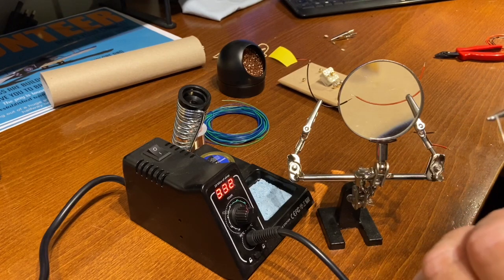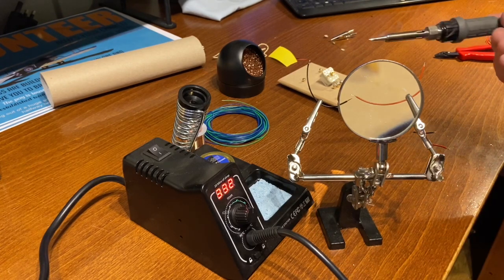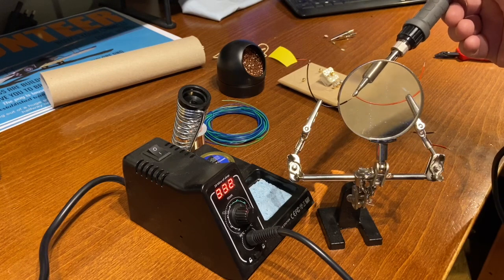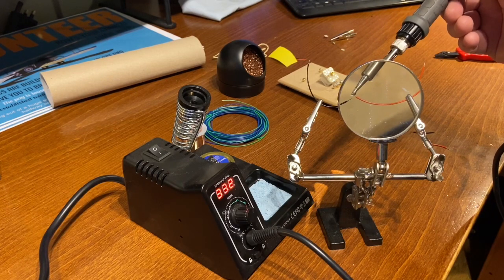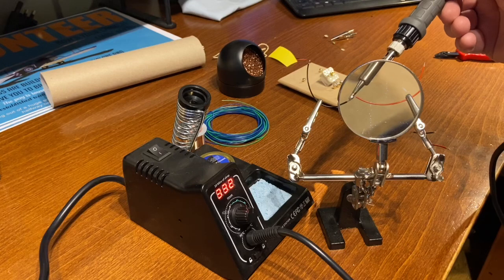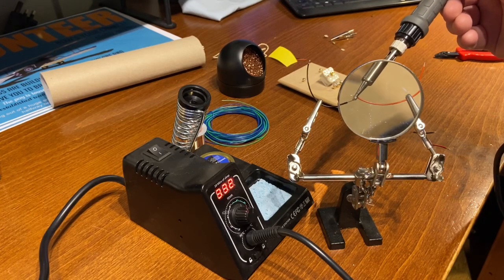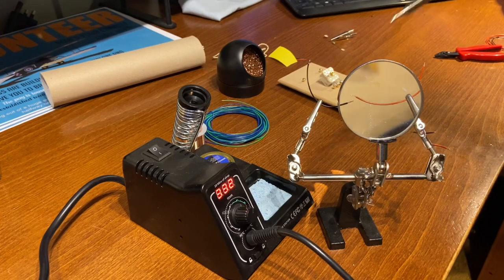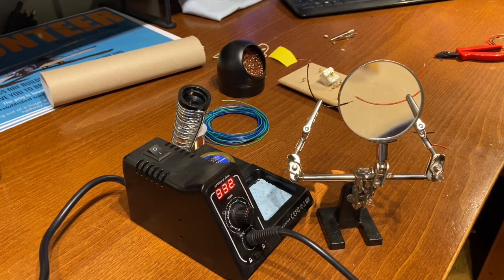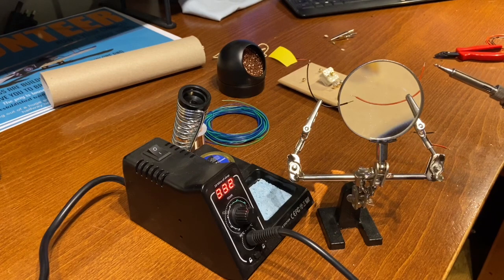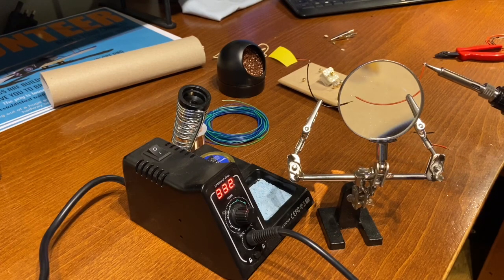So apply a little bit of solder to the tip of the soldering iron and then onto the wires. And that's them tinned. I'm going to do this more off camera because it's a lot easier, and that gives you an idea of how it's done.